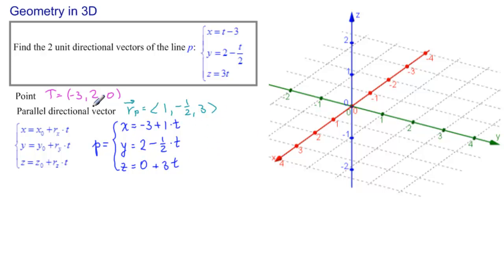So, let's draw this. Now, we can actually draw this line because we have a point and a parallel directional vector. So, let's find the point minus 3 on the X, 2 on the Y, 0 on Z, so there's T. And then our RP ends at 1 minus 1 half and then 3, so way up here. So, this is our parallel directional vector. And this is actually not part of the problem that we're drawing this, but it's easier to see. So, this is our P.